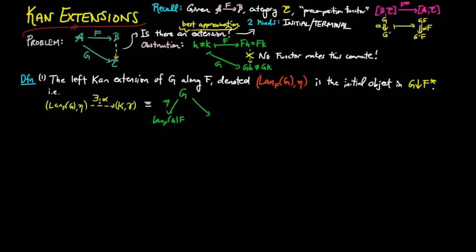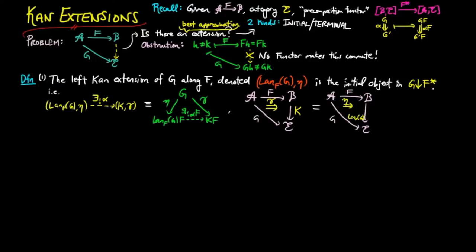In diagram form, this means that the following two categorical diagram commutes, and in the one categorical form, it means the two natural transformations compose, giving us alpha F eta equal to gamma.